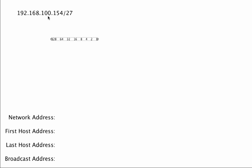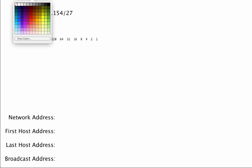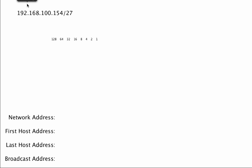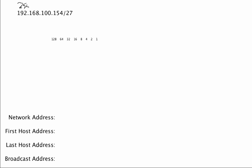Before we start, we are going to look at that slash 27 and determine what the traditional dotted decimal netmask is. If we have 27, that means we have 27 bits of network, which means our traditional dotted decimal mask would be 255.255.255 — that's 8 plus 8 plus 8, which is 24 — and we still have three more bits.